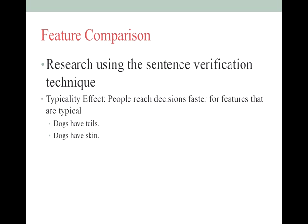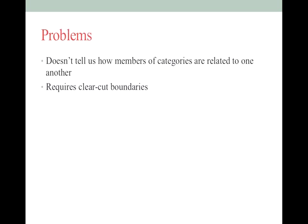They also include things you say no to, like 'dogs have leaves,' to make sure people are paying along well. The typicality effect means things that are more typical are decided on faster. The problem with feature comparison theory is that it explains how members get in and out of categories, but it's black and white — if you're in the category, you're the same type of member as everyone else. It doesn't explain why we think penguins are birds, but come on, they're penguins — especially when you consider ostriches. It doesn't explain how members within the category are related to each other.